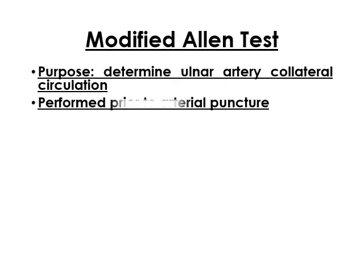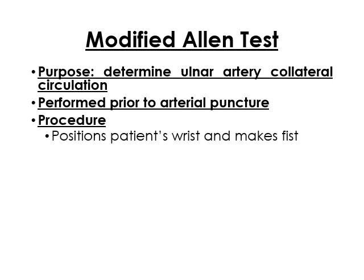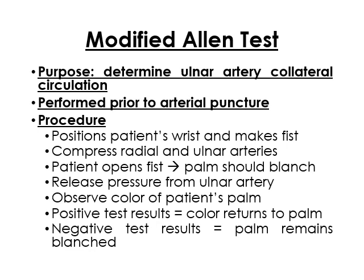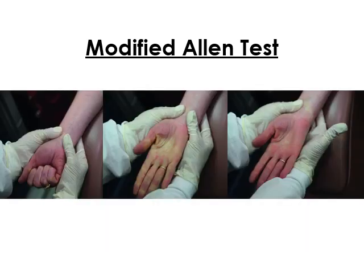I'll explain the modified Allen test when we zoom in. You compress both the radial and ulnar arteries to block blood flow, then after a few minutes, release the ulnar artery. Once the hand turns red again, it means the ulnar artery can compensate if the radial artery is ever damaged.